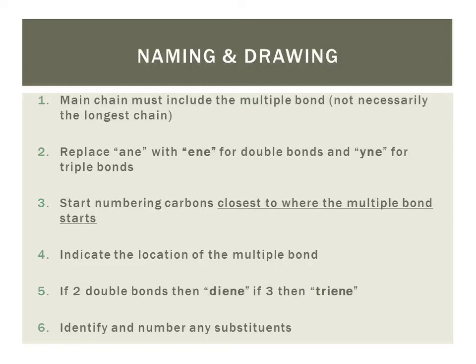So your suffix is going to end up being hyphen, number, hyphen, and the ending ene or yne, depending on if it's a double or a triple bond. Now just like you did when you had more than one alkyl group or substituent, we need to indicate if there's more than one multiple bond, using those small prefixes, di or tri, before our ending that indicates the double bond. And then our last step is just to identify and number any substituents like you usually would with alkanes.